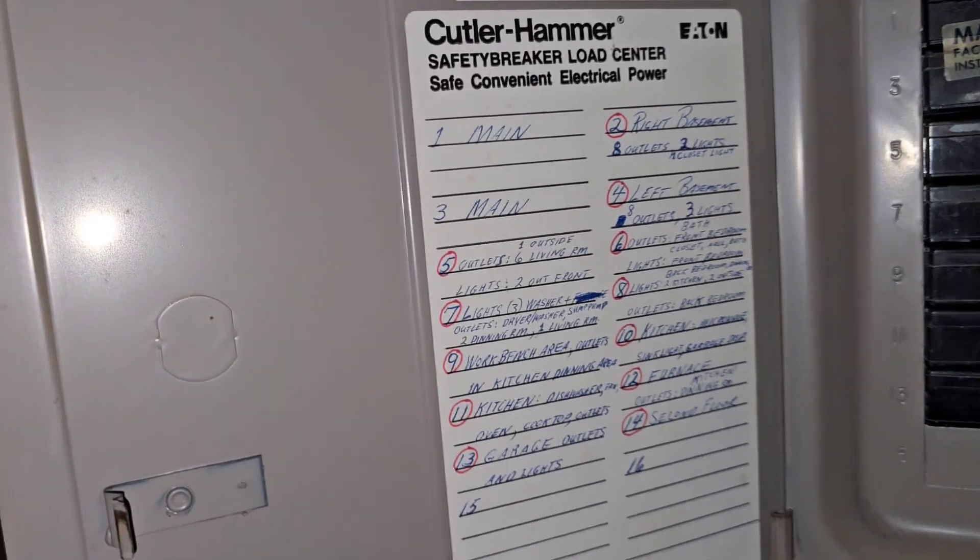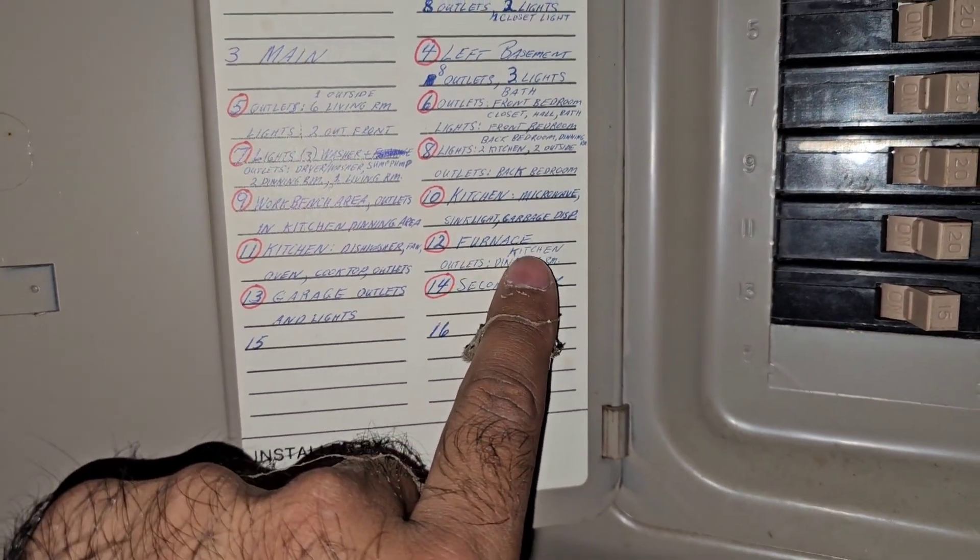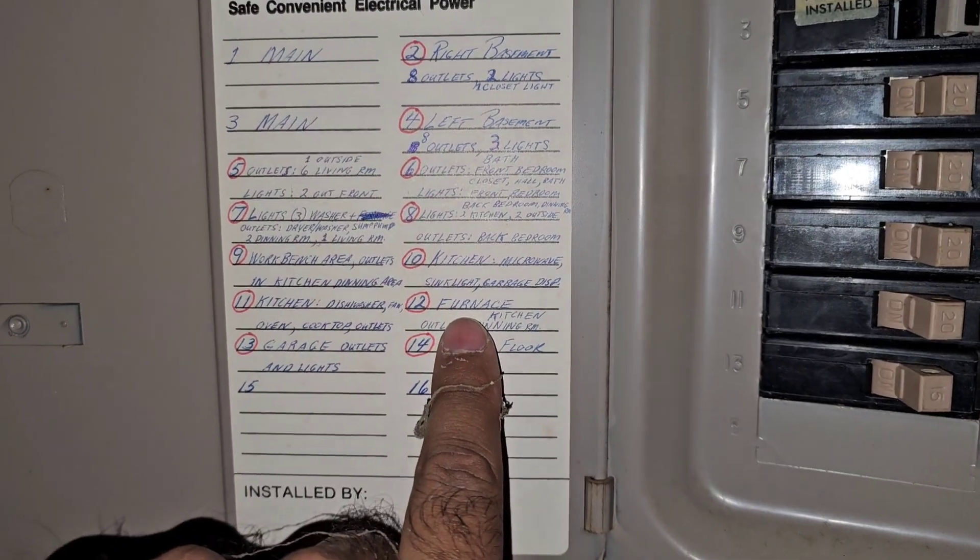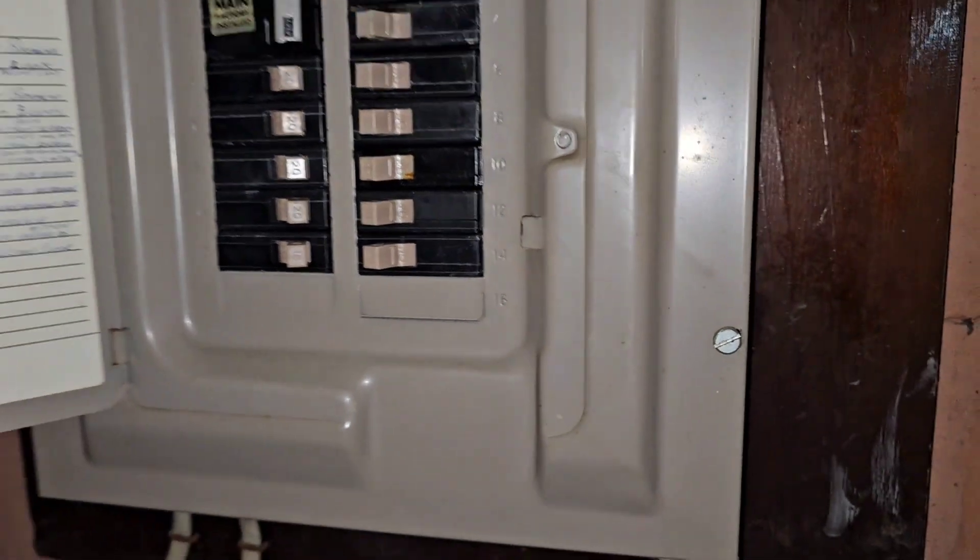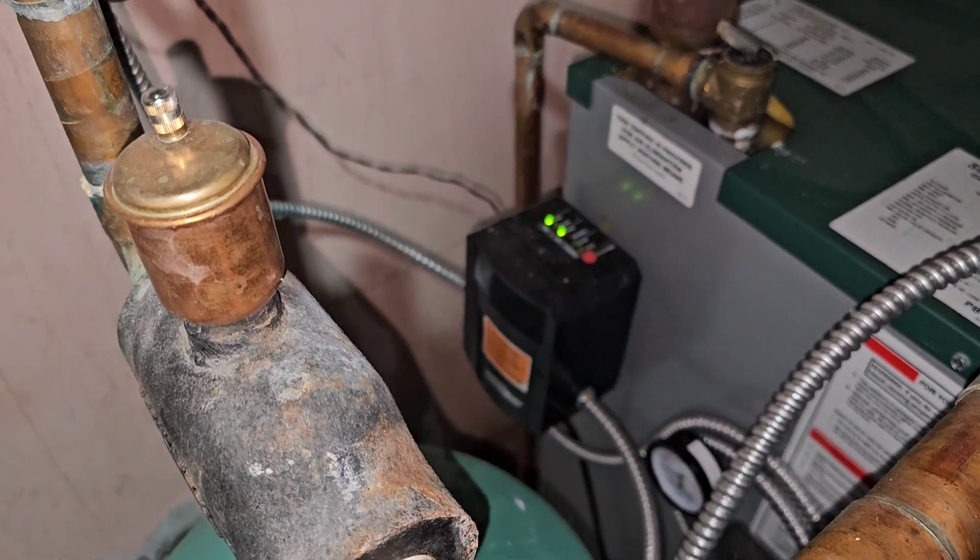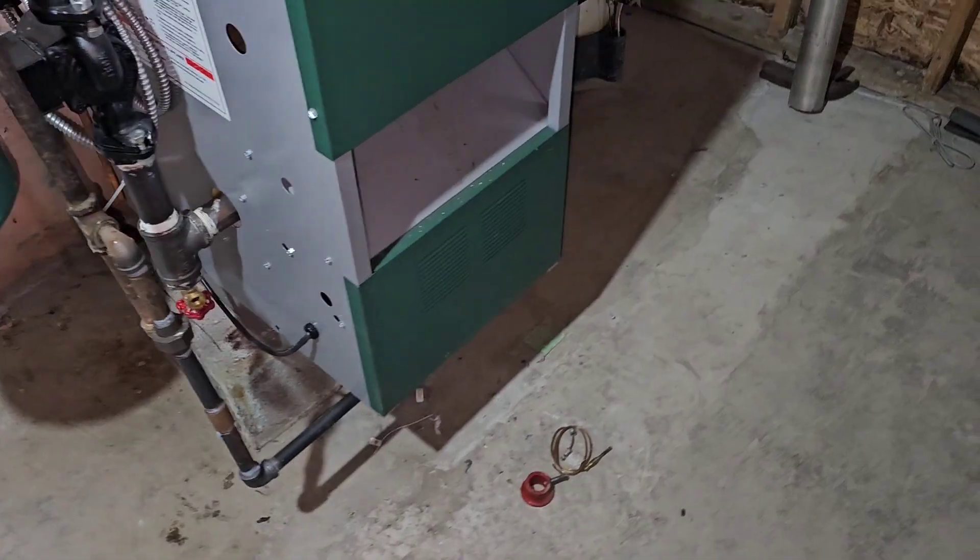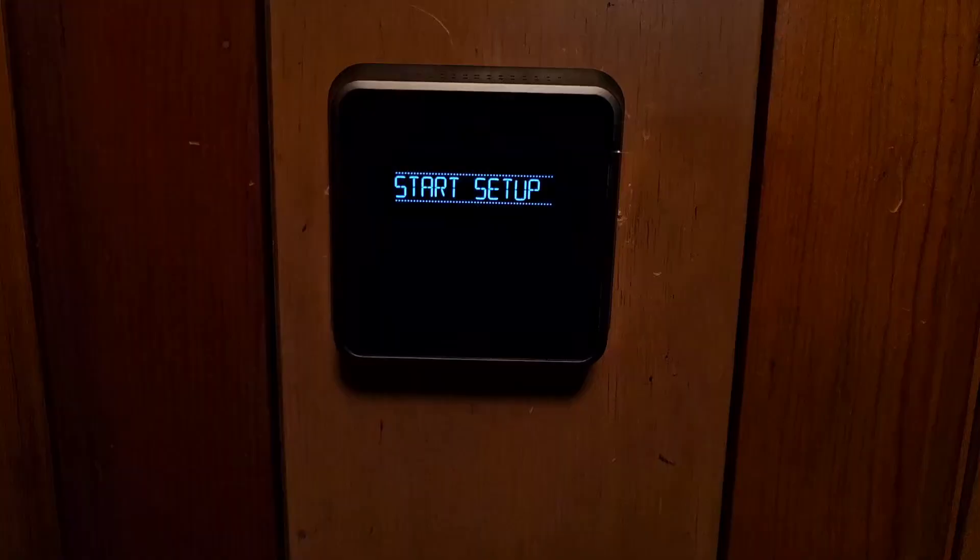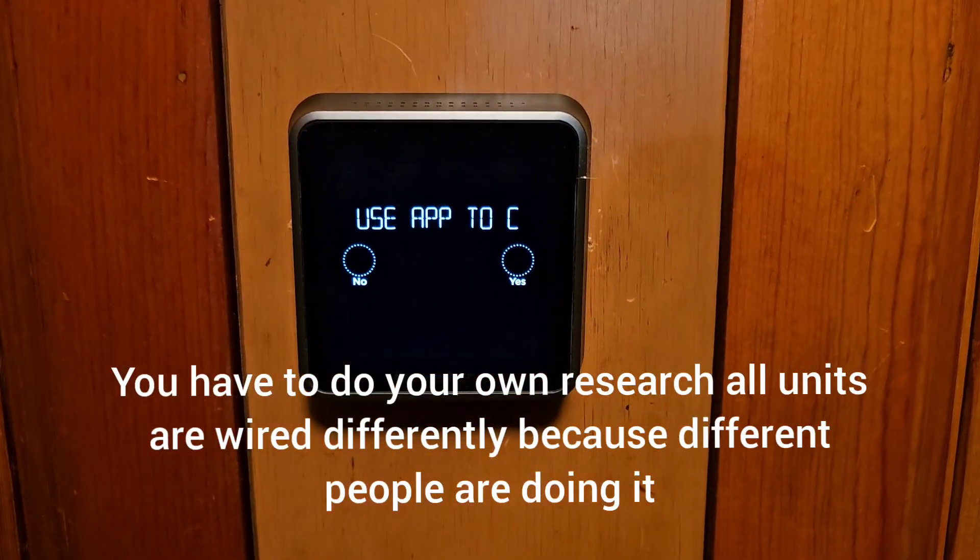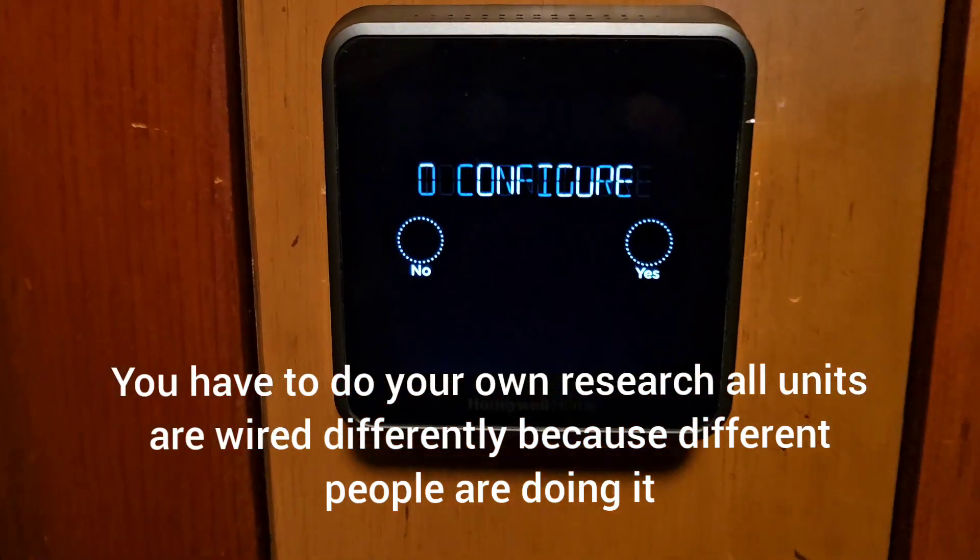Now I'm at the breaker - it says furnace, this one right here. I turn it on and let's see what happens. You can see the lights turned on at the furnace, and as you can see, the thermostat is getting power and starting to set up. Now I can configure it and it's working.